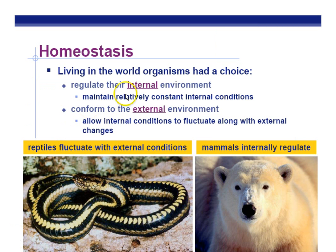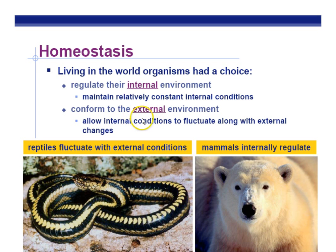Homeostasis means maintaining an internal environment. We talked about some examples in previous classes like regulating temperature. If you get too cold, you shiver to heat yourself up. If you get too hot, you sweat to cool yourself down. We have to have relatively stable internal conditions for carrying out life processes, and we also have to conform to the environment — the environment doesn't change for us, we have to change for the environment.